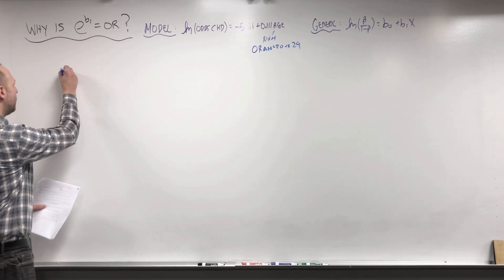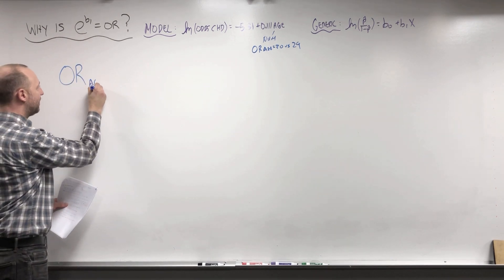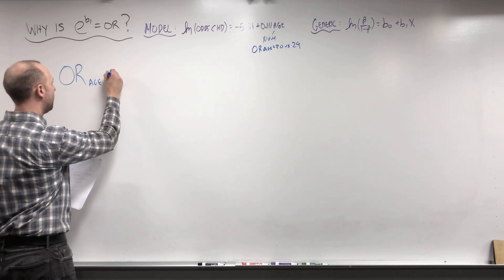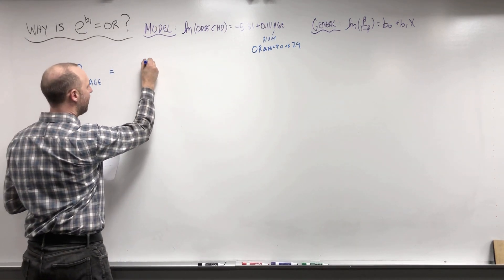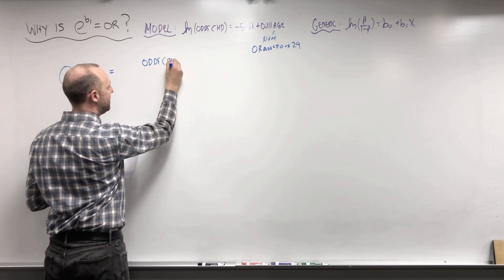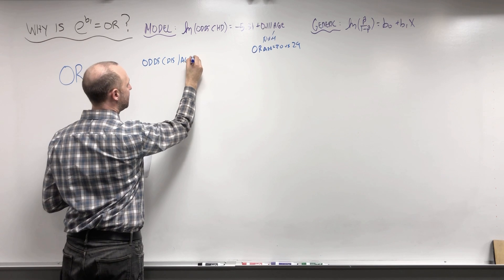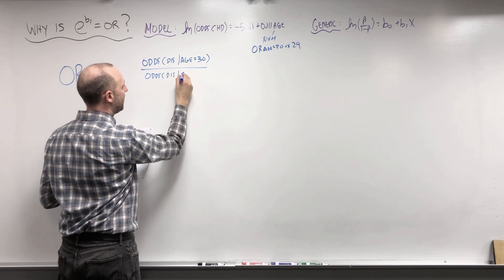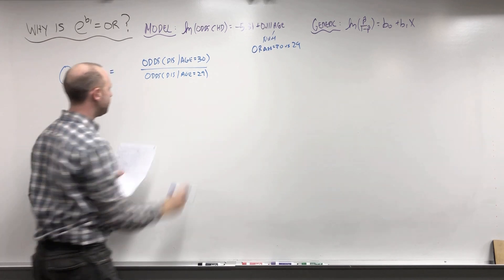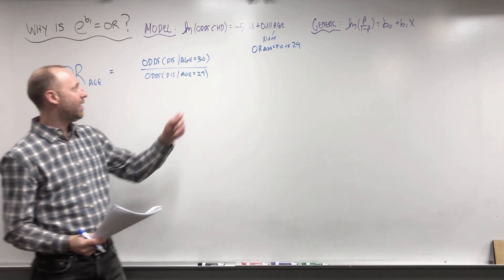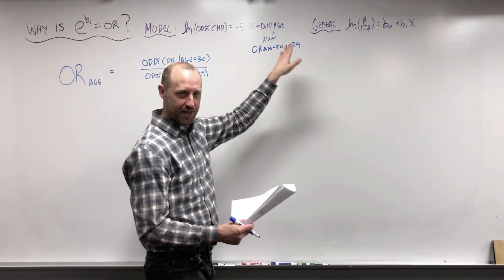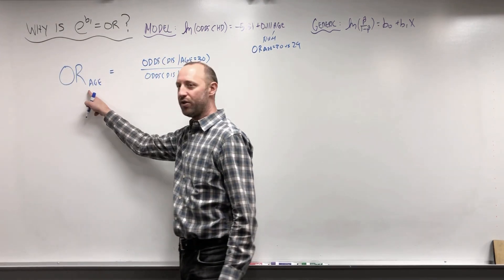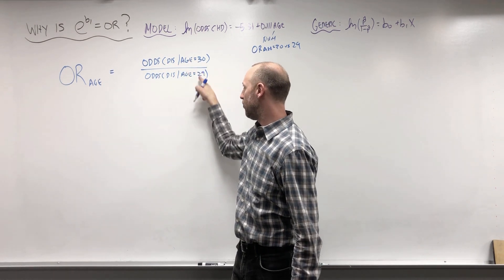What we want to do is calculate the odds ratio associated with age. The odds ratio is the odds of the disease given age is 30 over the odds of disease given that the age is 29 — a one-year increase. To write out the definition: the odds ratio for age is the odds of disease for a one-unit increase in age.